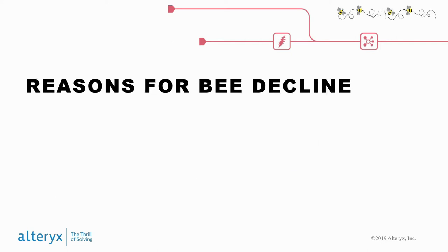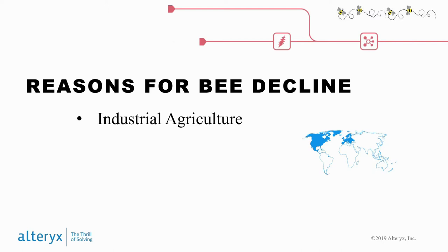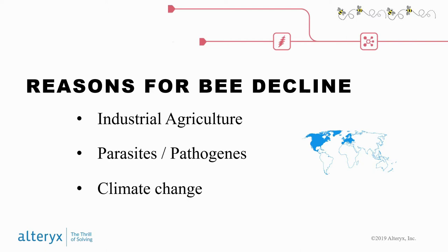The question is: why are these bees disappearing? This is a phenomenon that is happening worldwide, but especially in North America and Europe we have seen alarming numbers. There are three main reasons why globally the bees are disappearing. One of them is industrial agriculture. The second one is all the parasites and pathogens inside the colonies that are killing those bees. And the third one is climate change — we are losing our biodiversity.